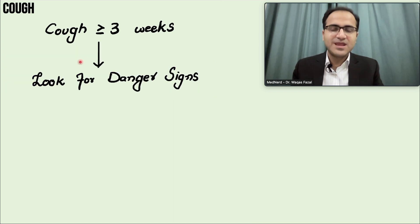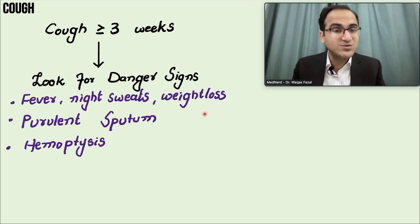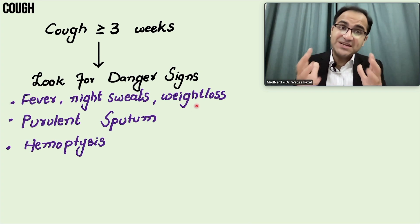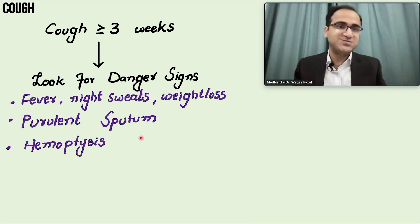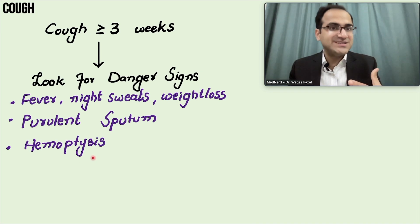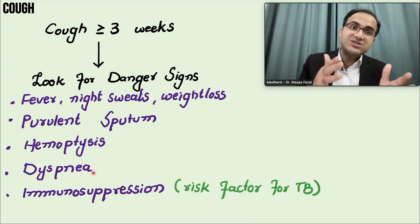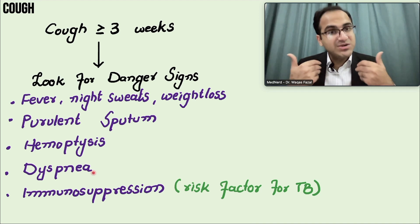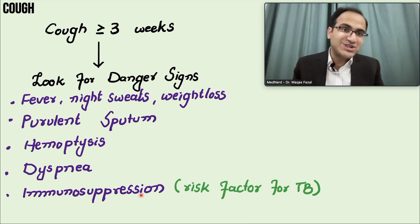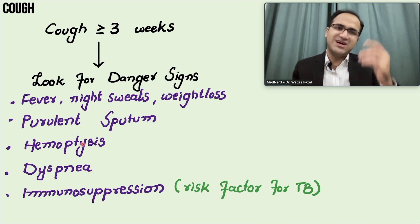Look for danger signs: fever, night sweats, and weight loss indicate tuberculosis or possibly lung abscess. Purulent sputum and hemoptysis may indicate lung cancer or lung abscess. Dyspnea with cough may indicate pulmonary artery hypertension or heart failure. Immunosuppression is a risk factor for tuberculosis. These are dangerous signs to look for in any patient presenting with cough lasting greater than three weeks.